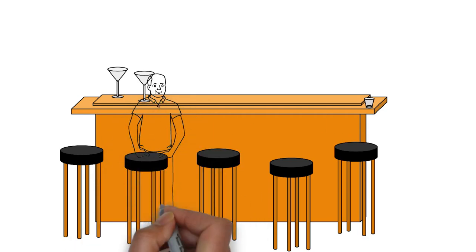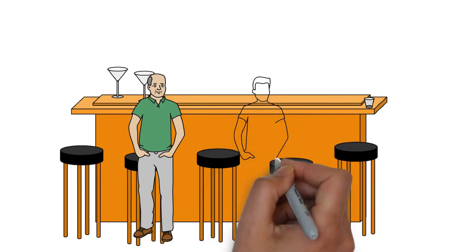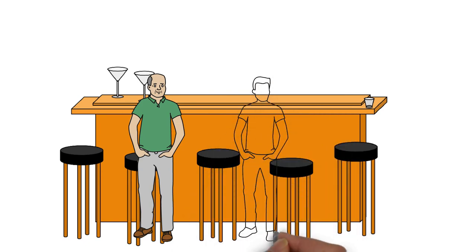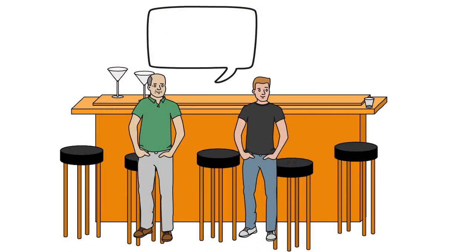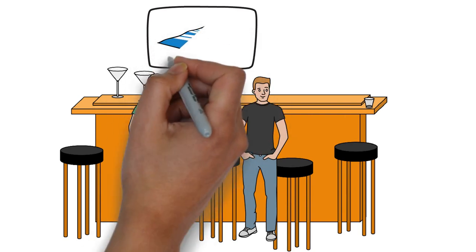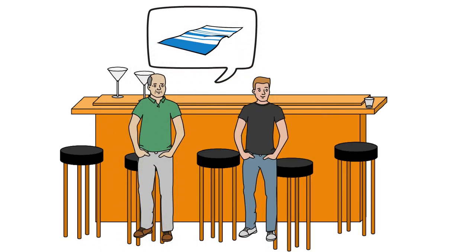Why a towel? The Guide extols the merits of towels due to their multiple uses. If you have a towel on you, you're assumed to have everything else you need too. Ford wishes of all the races who could come to Earth it didn't have to be the Vogons, but he knows what to do. Besides, he has his towel.